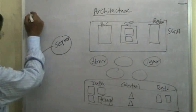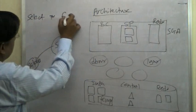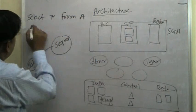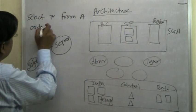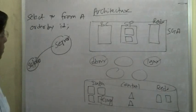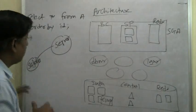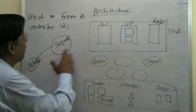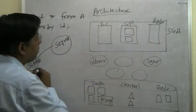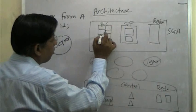Now, this is the select statement. Select star from table A, and then maybe order by ID. ID is one of the columns in that table. So the parsing will happen, the execution plan, all that stuff will happen. And then finally, when the execution starts, the data is now brought into the buffer cache. All those steps are done. Data is brought into the buffer cache.